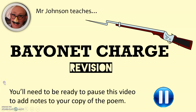Hello everybody and welcome to this video — Mr Johnson teaches Bayonet Charge, some revision for that. This is from your GCSE English Literature, Paper 2, Section B, where the exam board will give you a printed copy of one of the 15 poems you've studied, along with a question to answer. It's up to you to choose a second poem, which will not be printed, so you will need to have some knowledge of these poems.